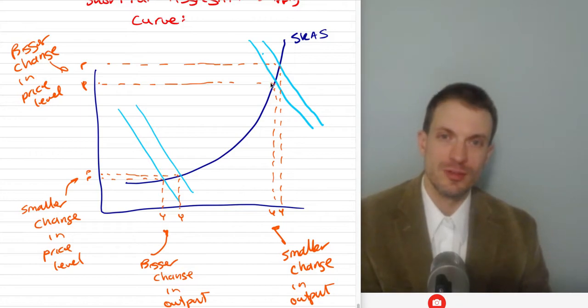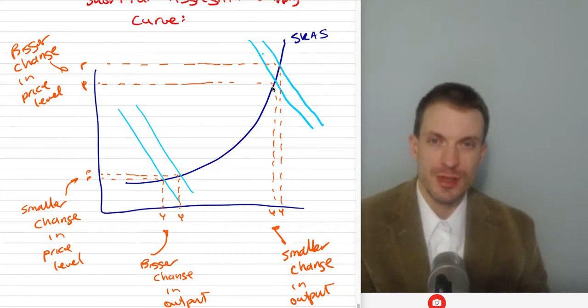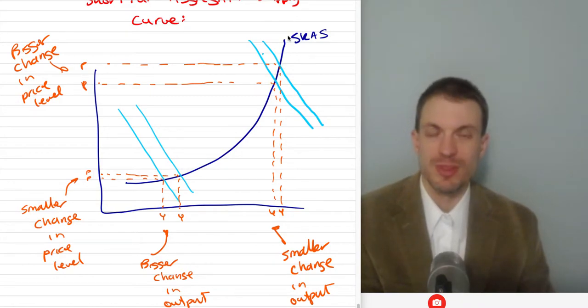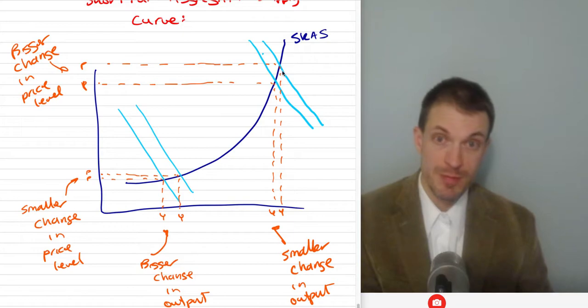More recently, policymakers were worried that we were getting into this area, so if we continue expanding with tax cuts and increased spending, maybe we'd start seeing inflation. We actually never really saw this type of inflation, but this was the worry. The Fed originally raised interest rates to shift aggregate demand leftward to counterbalance any possible inflation. This picture would be the motivation. We think maybe further increases in aggregate demand are going to cause very little change in output but big change in inflation, which would be bad.